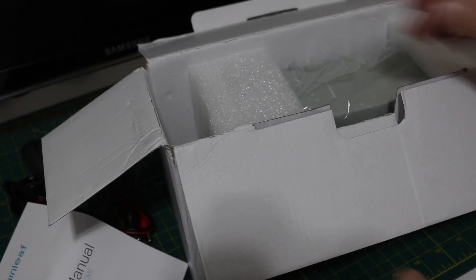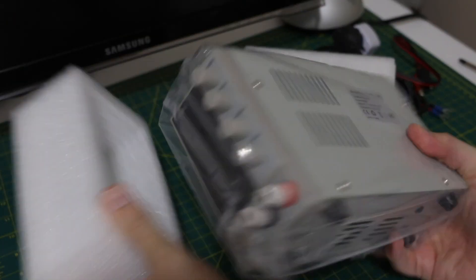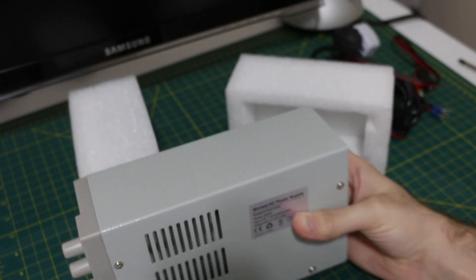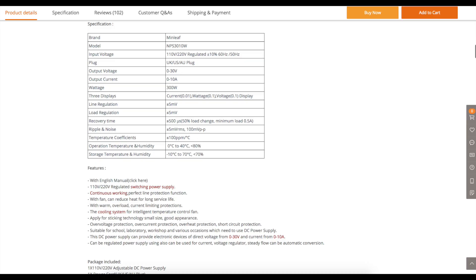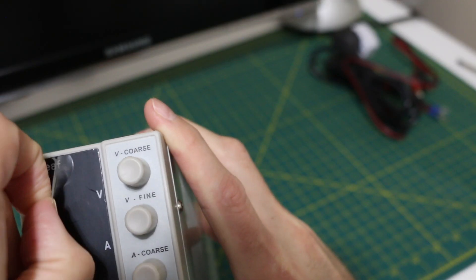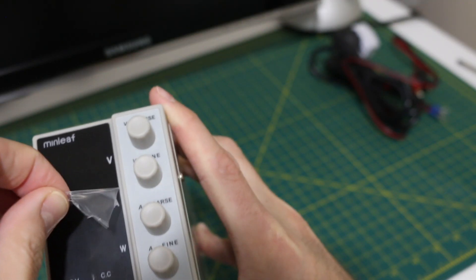The unit itself, model number NPS 3010W, so it's 30 volts, 10 amps, and 300 watts capable. It can run on AC 115 or 230 volts.